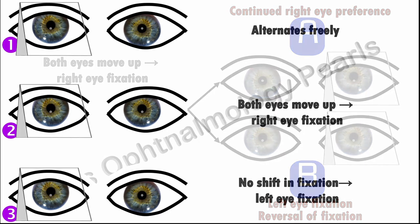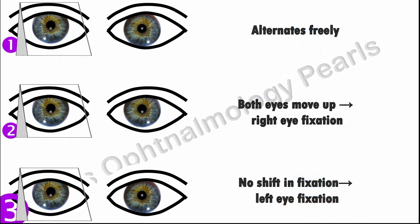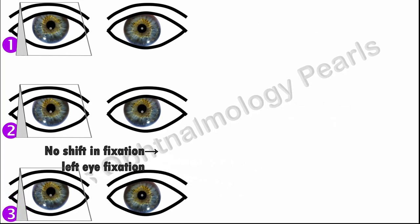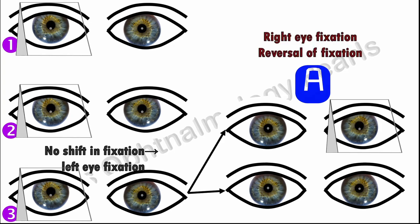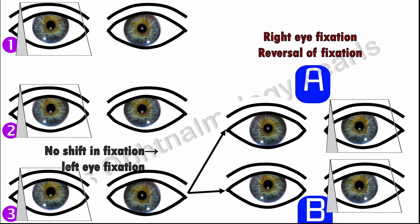In the third scenario, wherein the left eye was fixing with the prism over the right eye, again one of two positions can occur. Position A: there is no shift of fixation, indicating a right eye fixation — that is, there is a reversal of fixation, meaning no fixation preference. Position B: both eyes move up, indicating continued left eye fixation and therefore a left eye fixation preference.